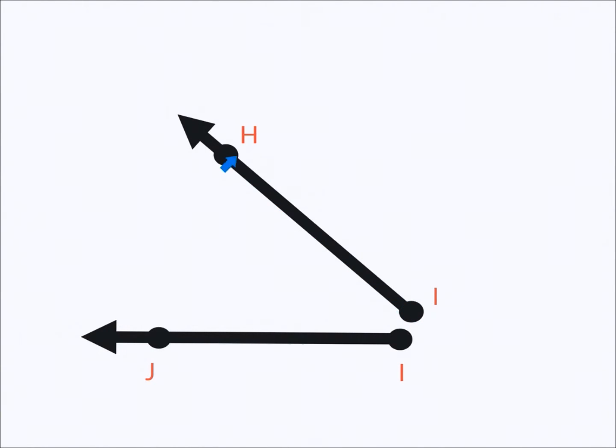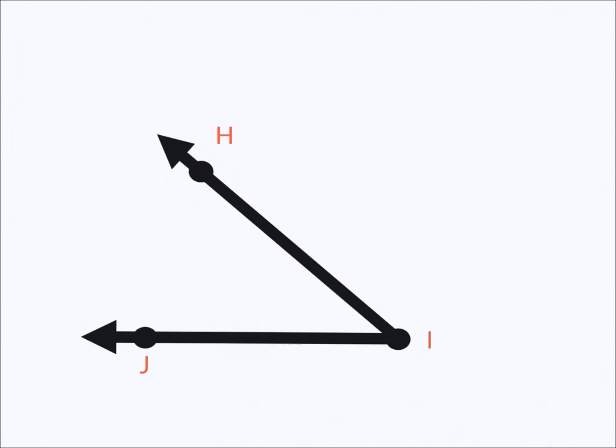Here we have ray IH and we also have ray IJ. To write their names we would write ray IH for this one and ray IJ for this one. Notice we always write the ray symbol to the right even though our ray is going to the left. If we put these rays together we get an angle, and we could call this angle HIJ with the I which is the vertex in the middle, or angle JIH, or if there was a number here we could call it angle 5. And last but not least we could call this angle I.